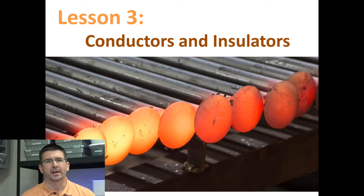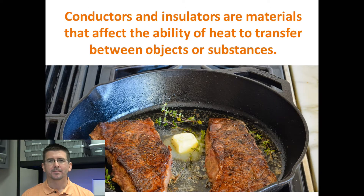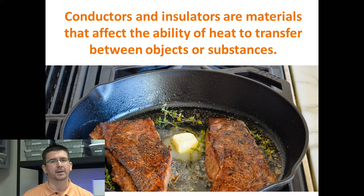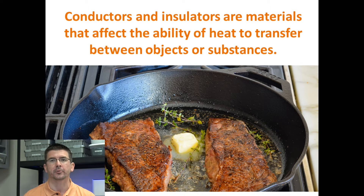Today's lesson is going to look at different types of substances that either make conduction — that transfer of heat — happen more easily, or that make it happen more slowly or help prevent it. Essentially, we're talking about substances that affect the ability of heat to transfer, either by helping it transfer more easily or by preventing or slowing down its transfer.